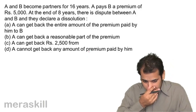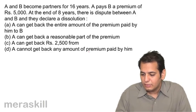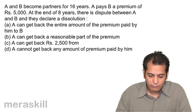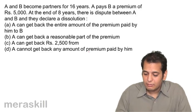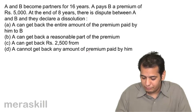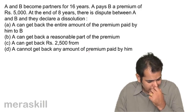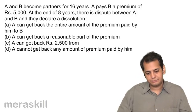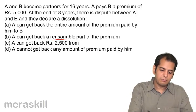A and B become partners for 16 years. A pays B a premium of rupees 5000. At the end of 8 years there is a dispute between A and B and they declare dissolution of the firm. The options are: A can get back the entire premium, a reasonable part, rupees 2500, or nothing. The answer is a reasonable part.